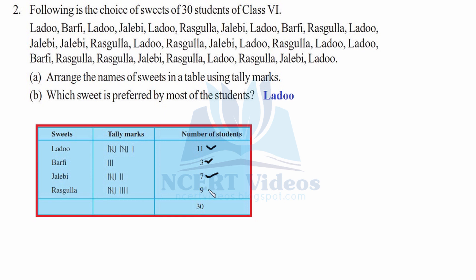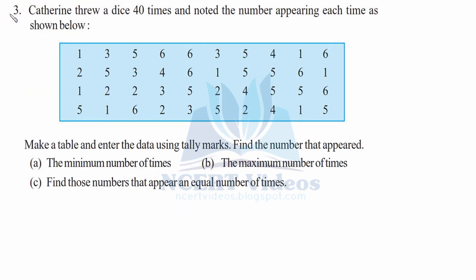When we add all totals: 9 plus 11 is 20, plus 7 is 27, plus 3 is 30, confirming 30 students total. For part B, which sweet is preferred by most students? From the tally marks you can easily see that 11 is the maximum — corresponding to laddu. So laddu is the most preferred sweet.